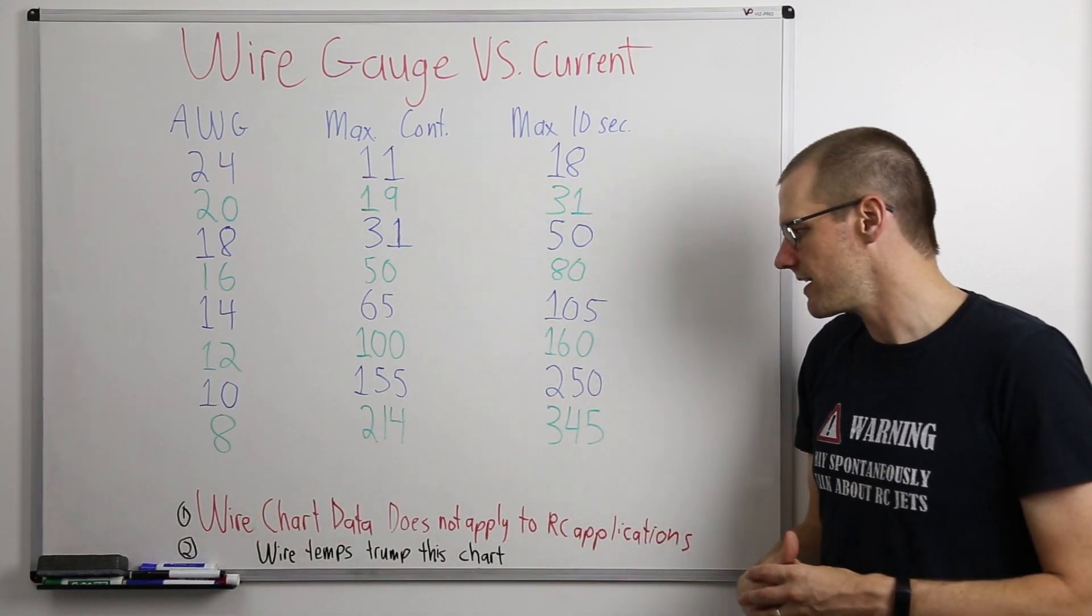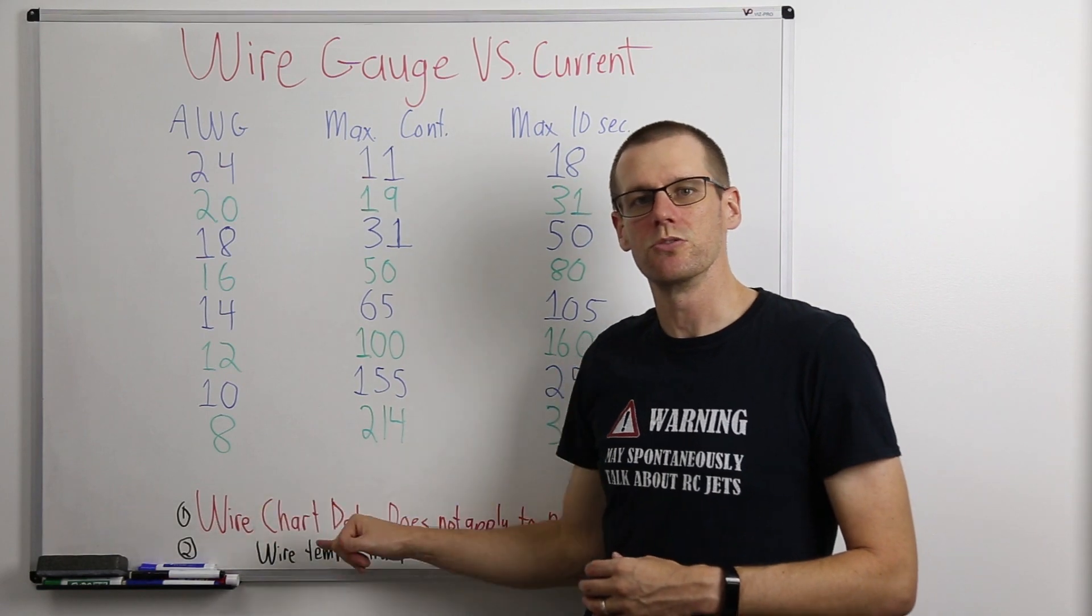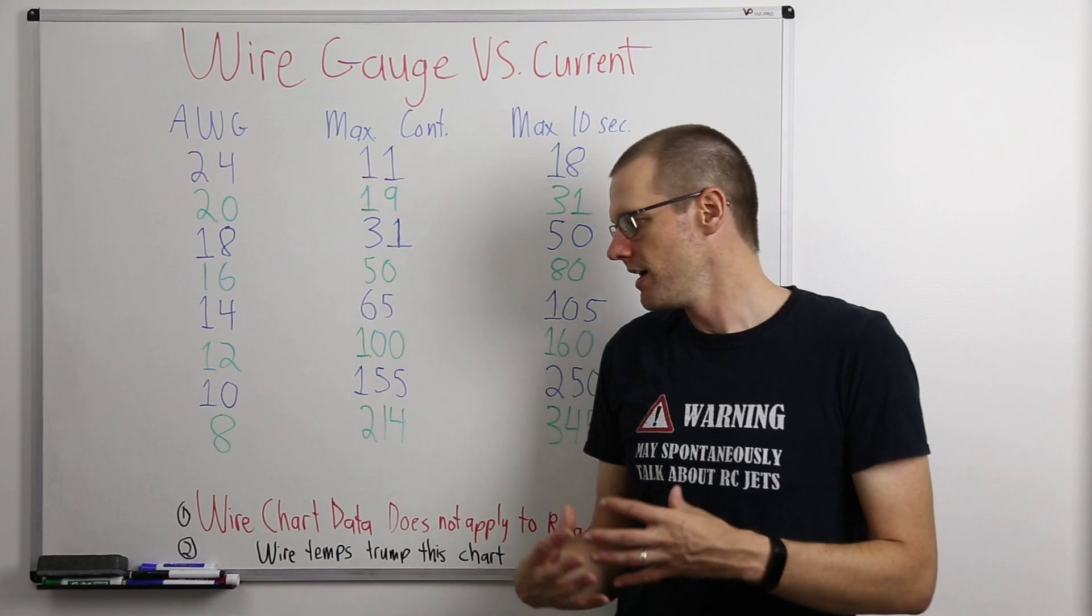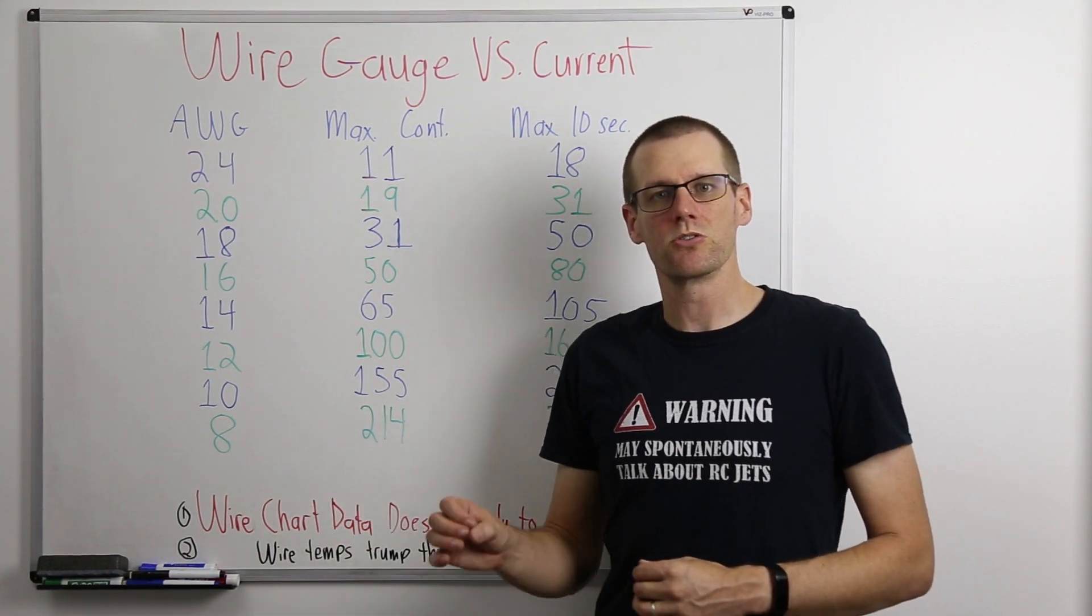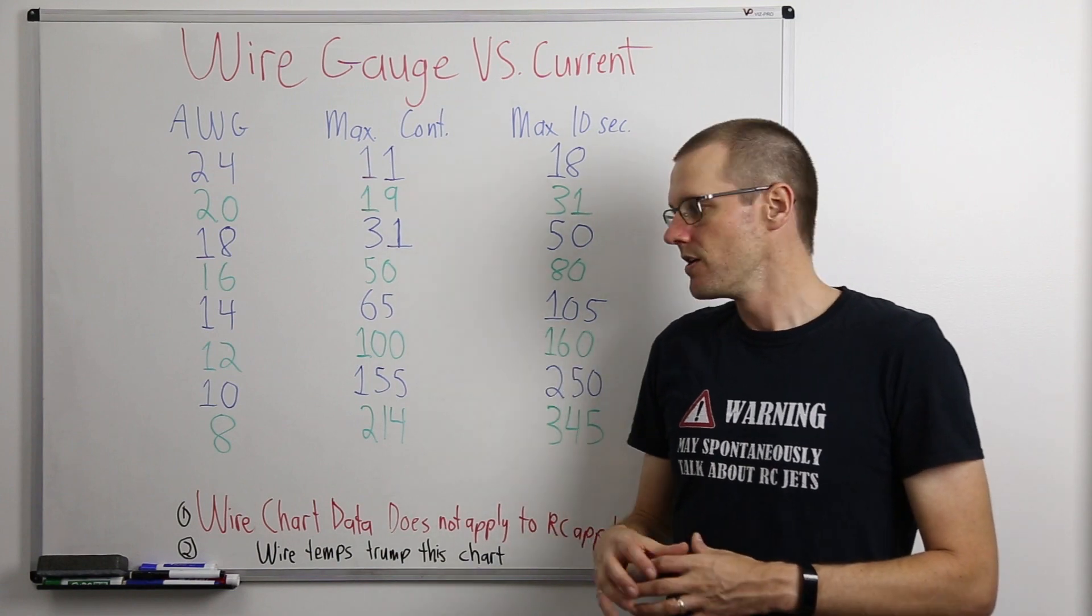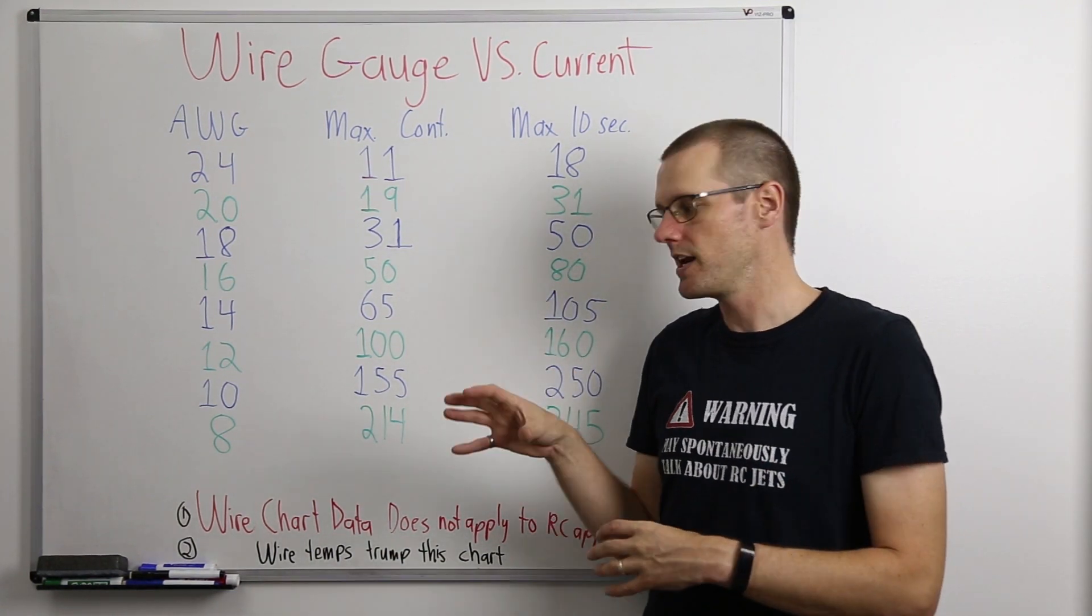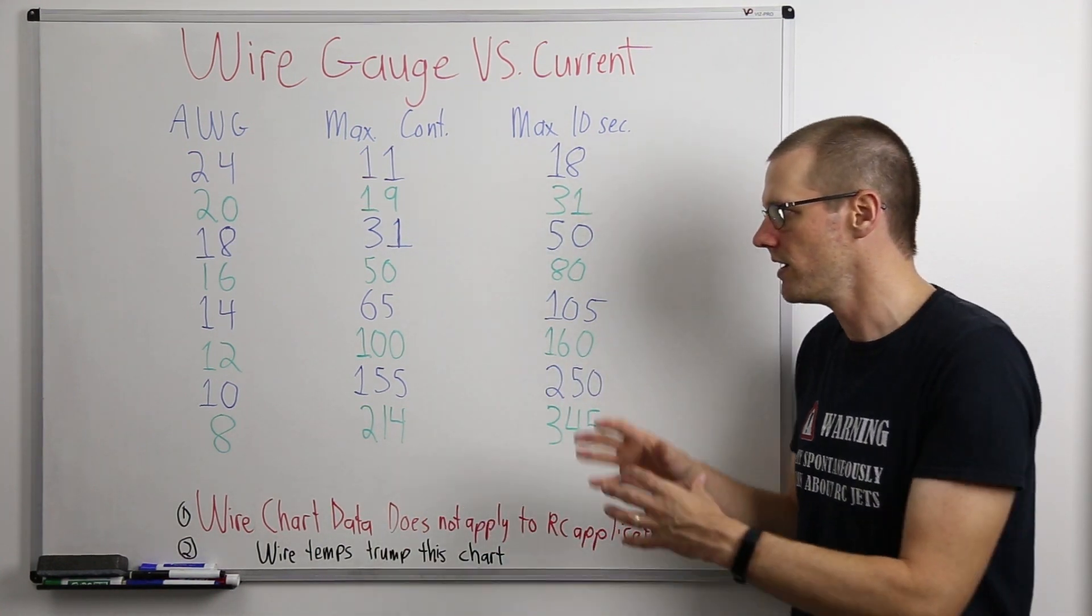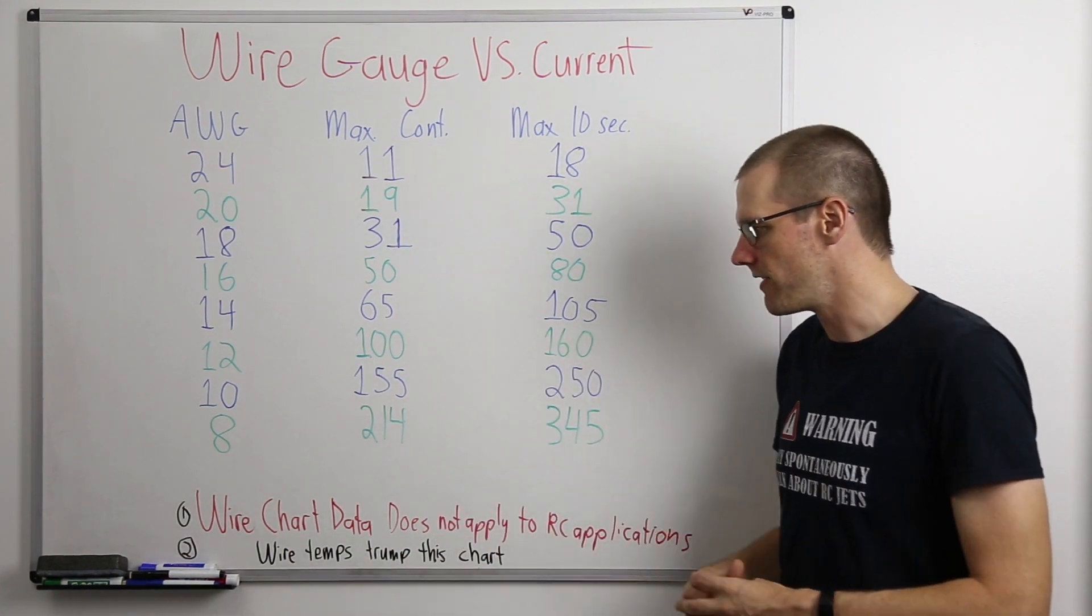So the wire chart data does not apply to RC applications. What I'm really referring to here as the wire chart data, this is charts that you can download off of the internet. Those charts are not specific to the radio control applications out there. This is why this chart is going to look very different than any of those charts that you can find online. We covered this in a previous video where this video is essentially the part two version of that.